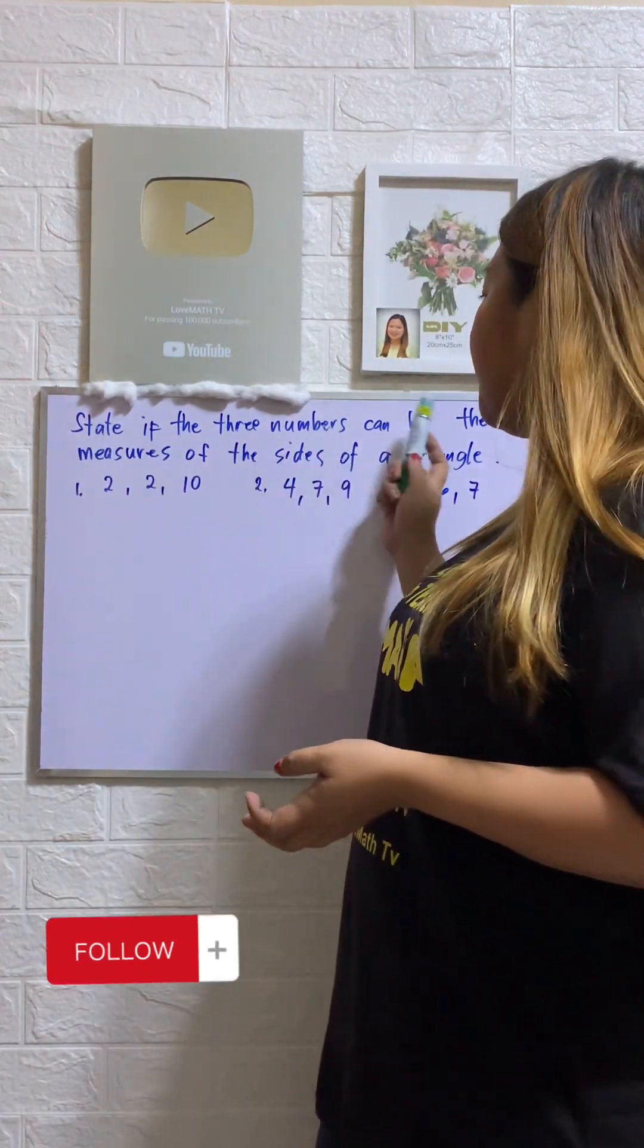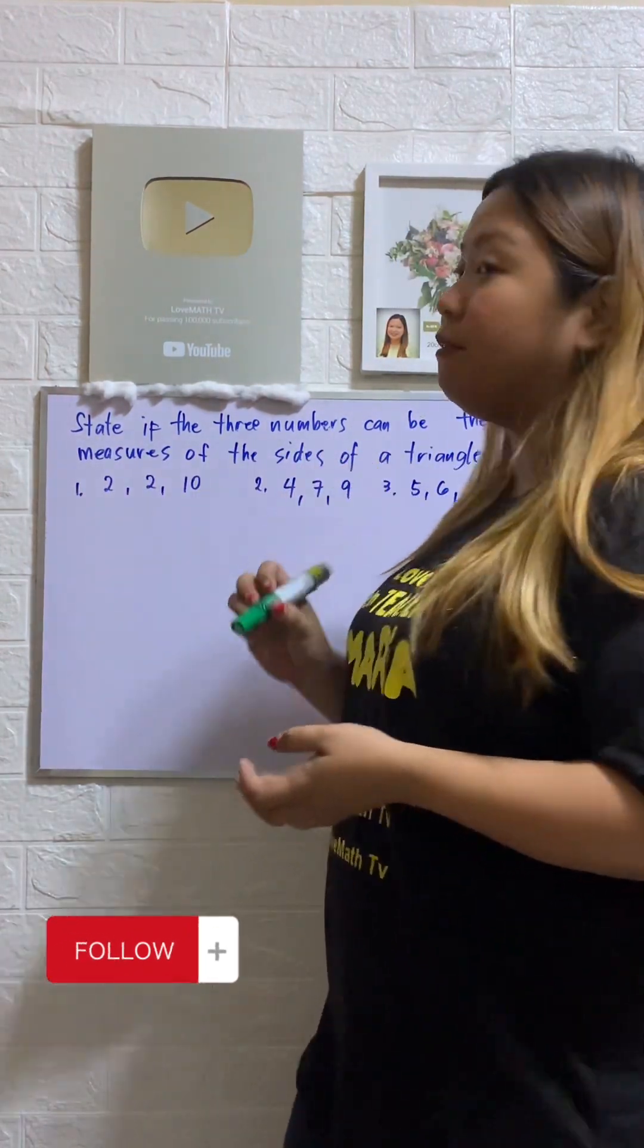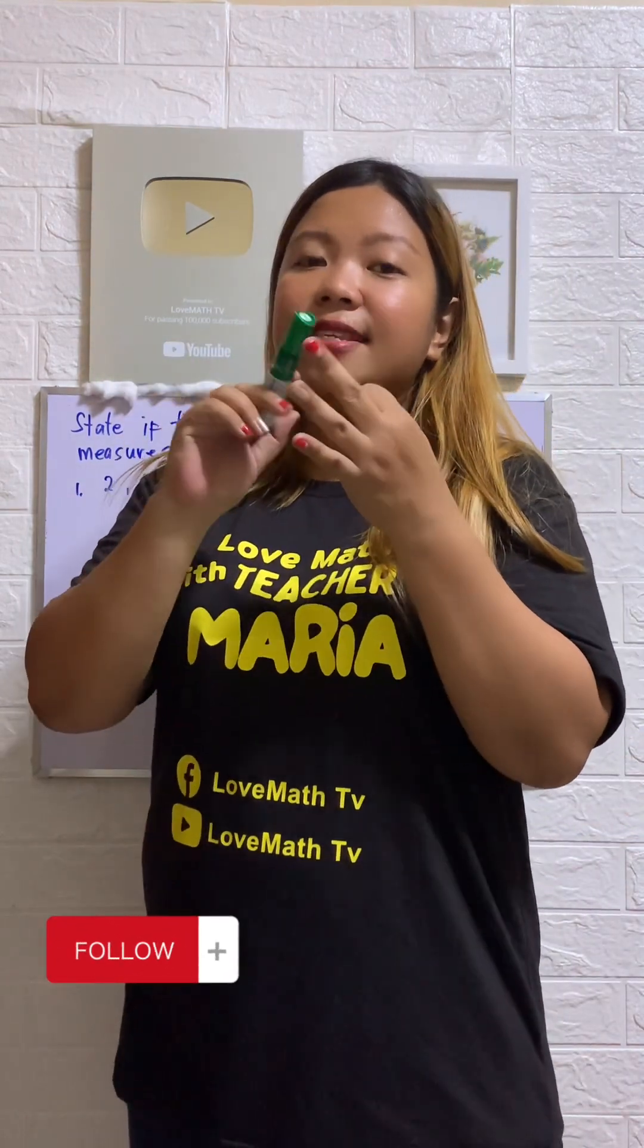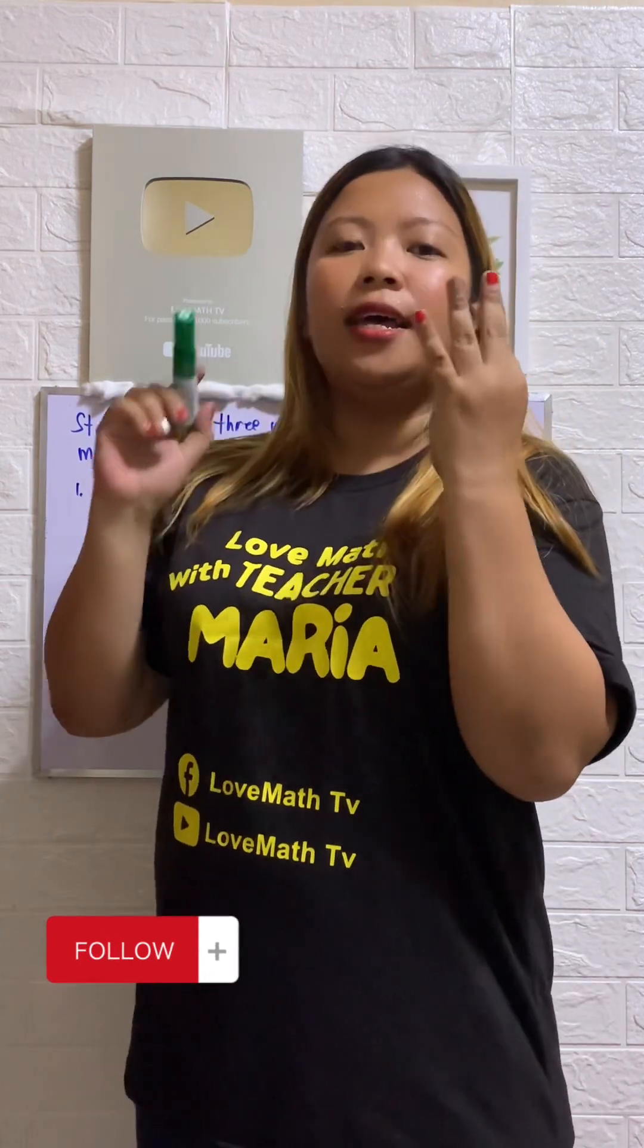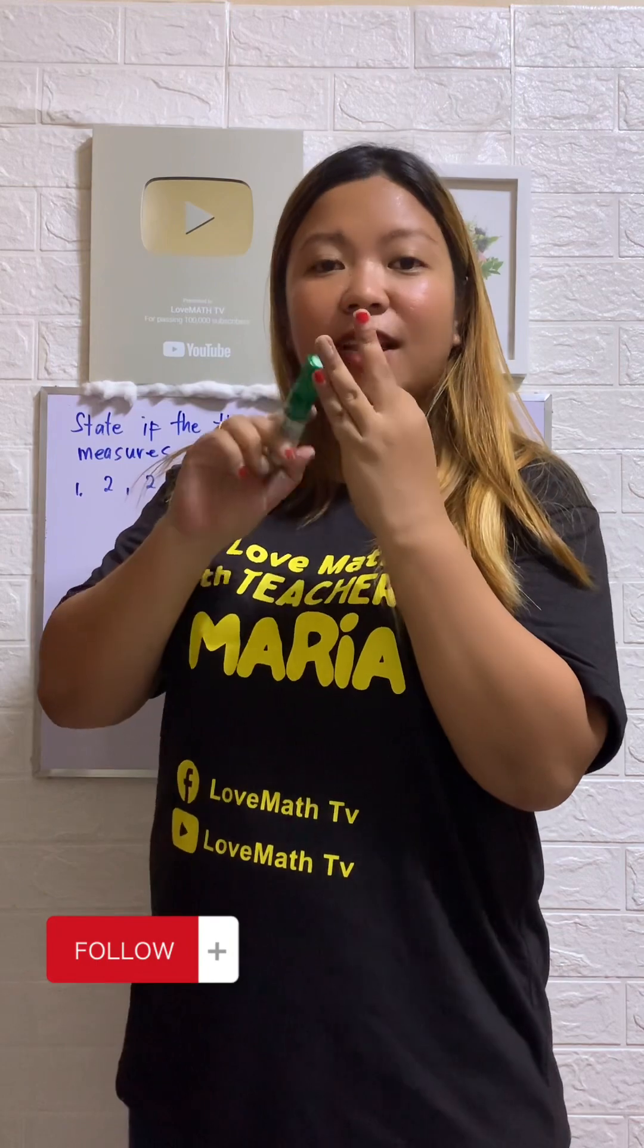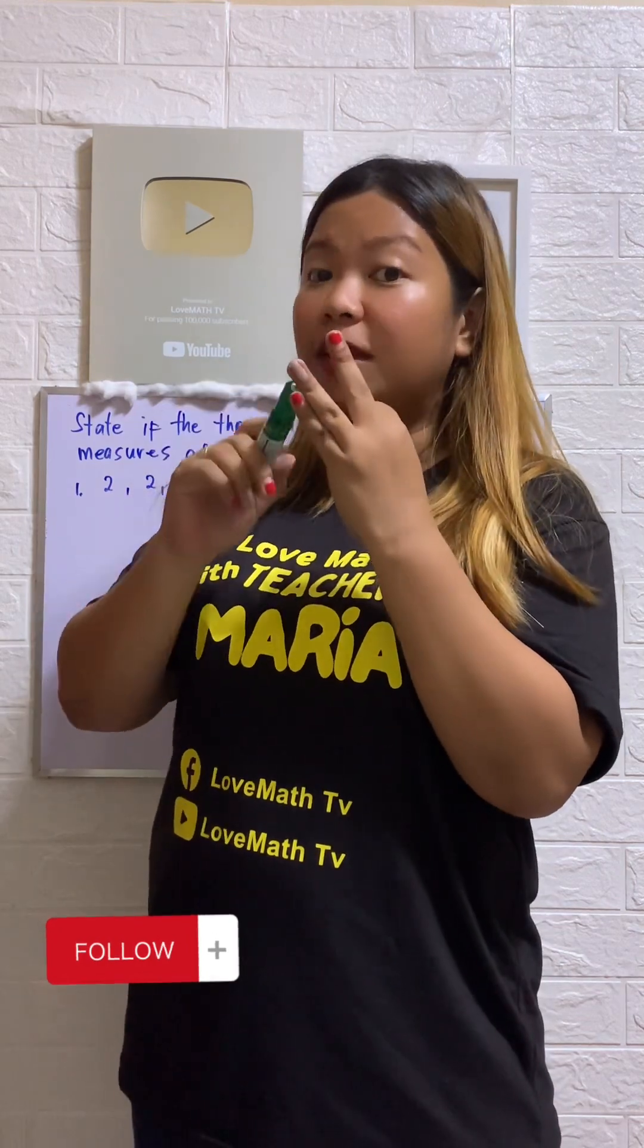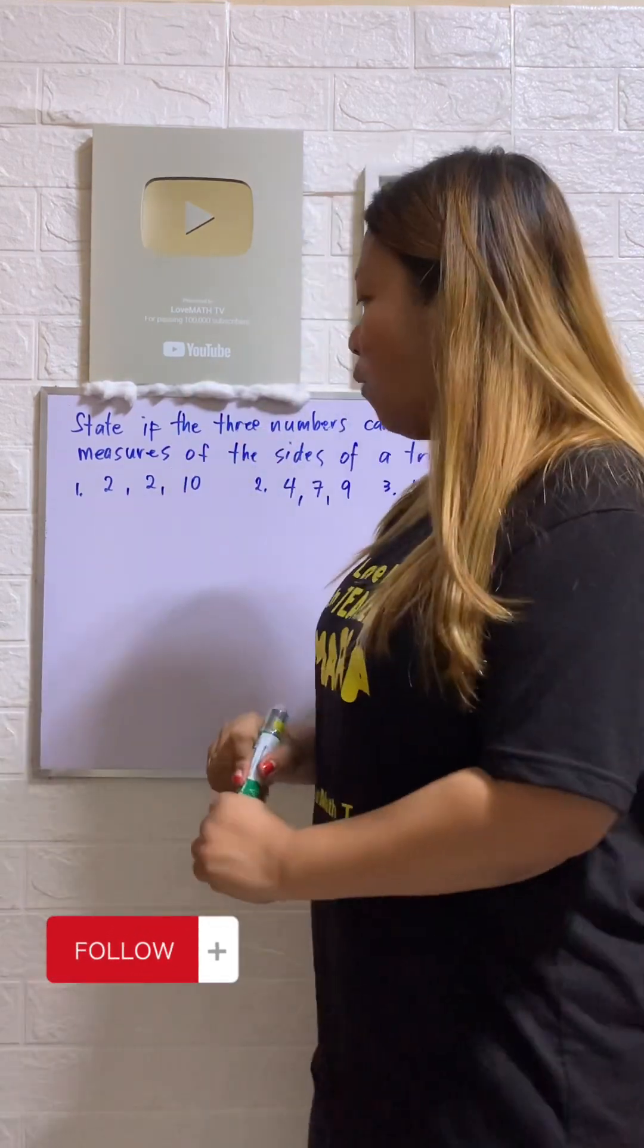State if the three numbers can be the measures of the sides of the triangle. So how are we going to identify that? We have to satisfy three conditions. We are going to add two sides and the sum of the two sides should be greater than the third side.